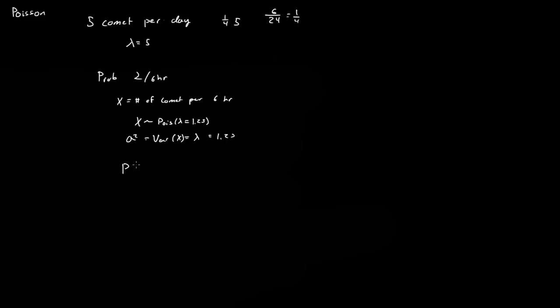So what we're asking is the probability that x equals 2. For a Poisson distribution, it's e to the negative lambda times lambda to the x, all divided by x factorial. Well, that's simply e to the negative 1.25 times 1.25 to the power of 2, all divided by 2 factorial.